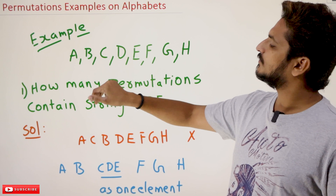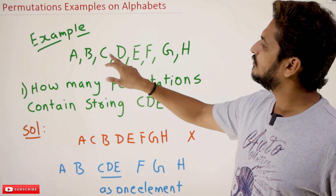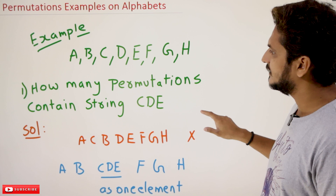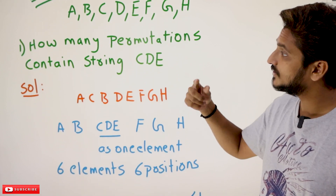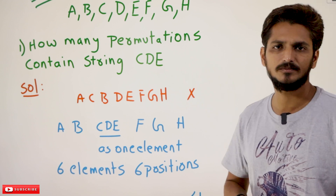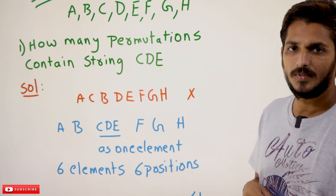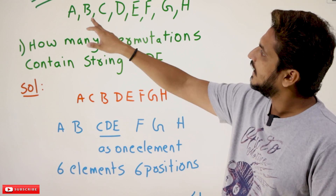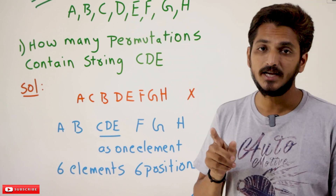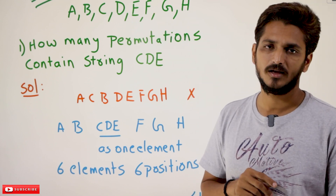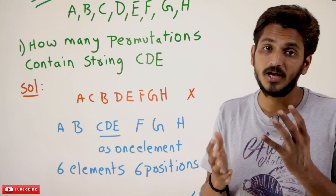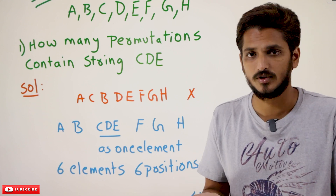Coming here, they have provided some alphabets A, B, C, D, E, F, G, H. Total eight alphabets are provided. The first question is: how many permutations contain the string C, D, E? How many ways are you going to arrange these eight alphabets? Eight factorial ways.